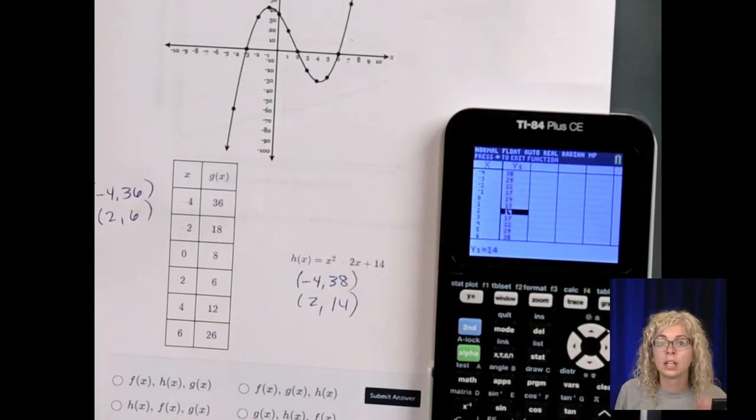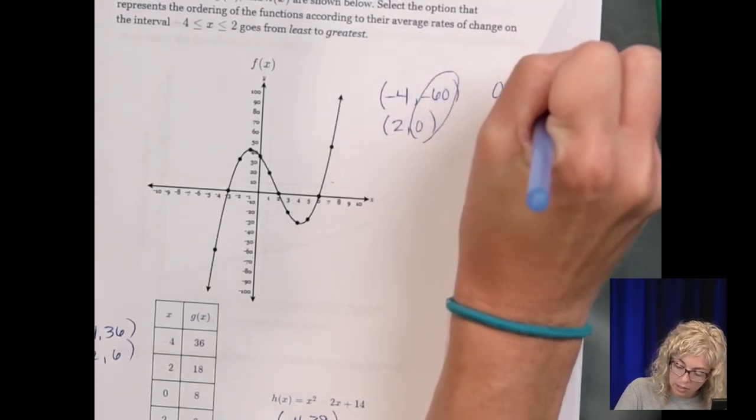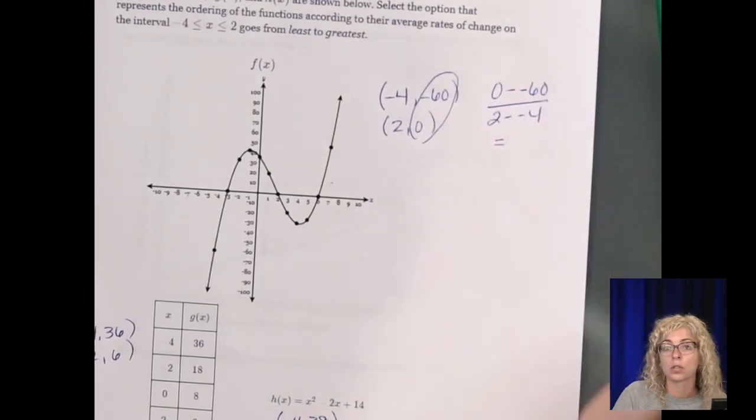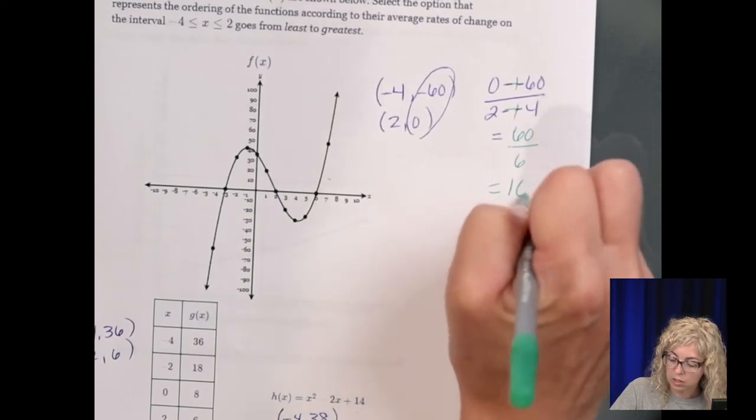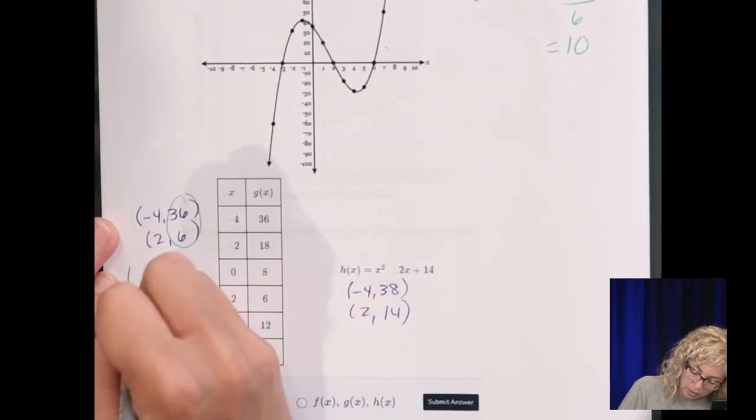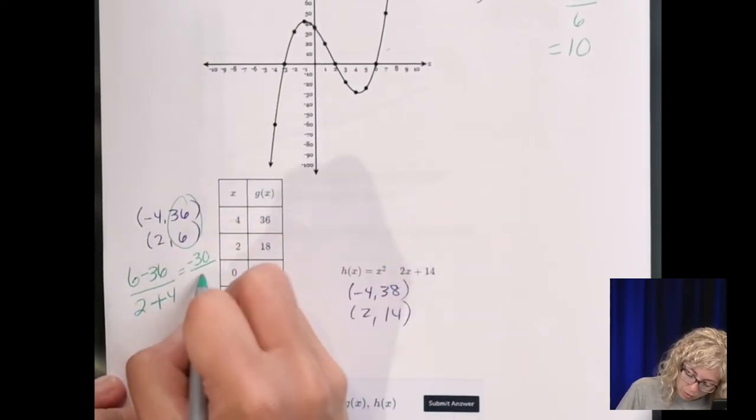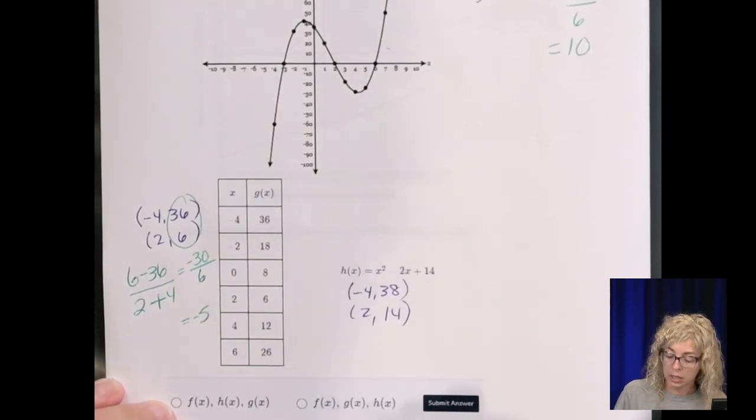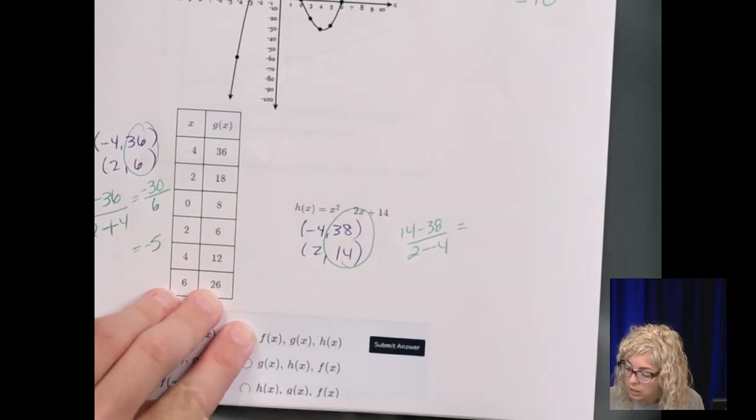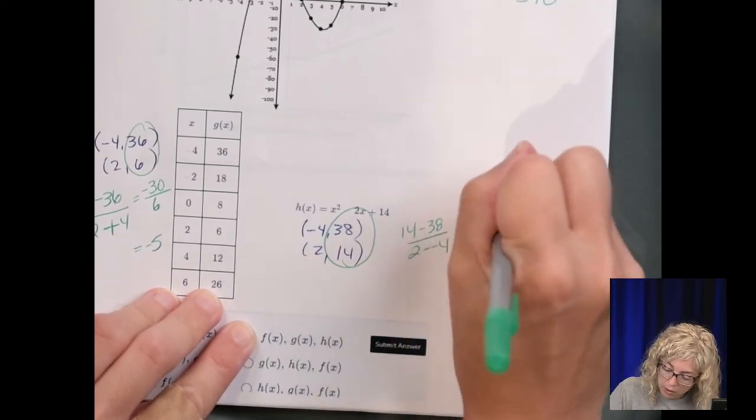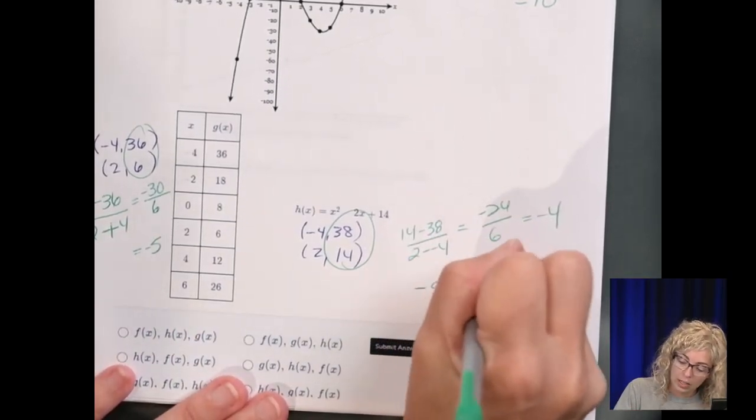Now I'm gonna calculate the slopes and then compare them. So the slopes, subtracting the y values, we've got 0 minus negative 60 over 2 minus negative 4. So again, two negatives turned into a positive. So we have 60 over 6, which is 10. And down here, we have 6 minus 36 over 2 minus negative 4. So we get negative 30 over 6, which is a negative 5. And then last, 14 minus 38 over 2 minus negative 4. Now 14 minus 38 is negative 24 over 6, which is negative 4.